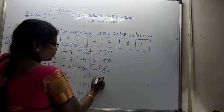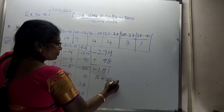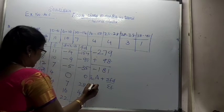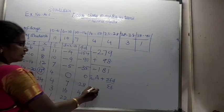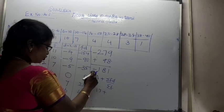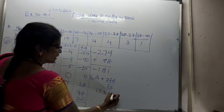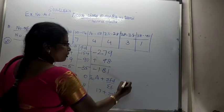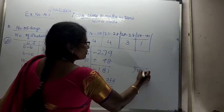The formula is: x bar equals A plus summation of FD divided by summation of F. So x bar equals 17 plus minus 181 divided by 40. I am going to divide.